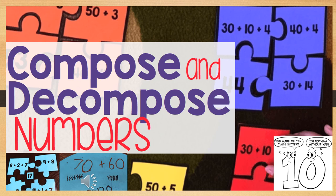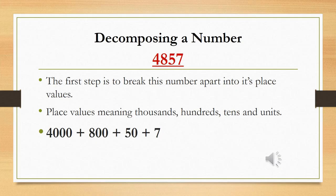Now that we know what compose and decompose mean, let's take the number 4857 and decompose it. Right, we have the number 4857. So, whenever we are decomposing a number, the first step is to break the number apart into its place value. When I say place value, I mean thousands, hundreds, tens and units. So, if I have to break up this number boys and girls, I would get 4000 plus 800 plus 50 plus 7.